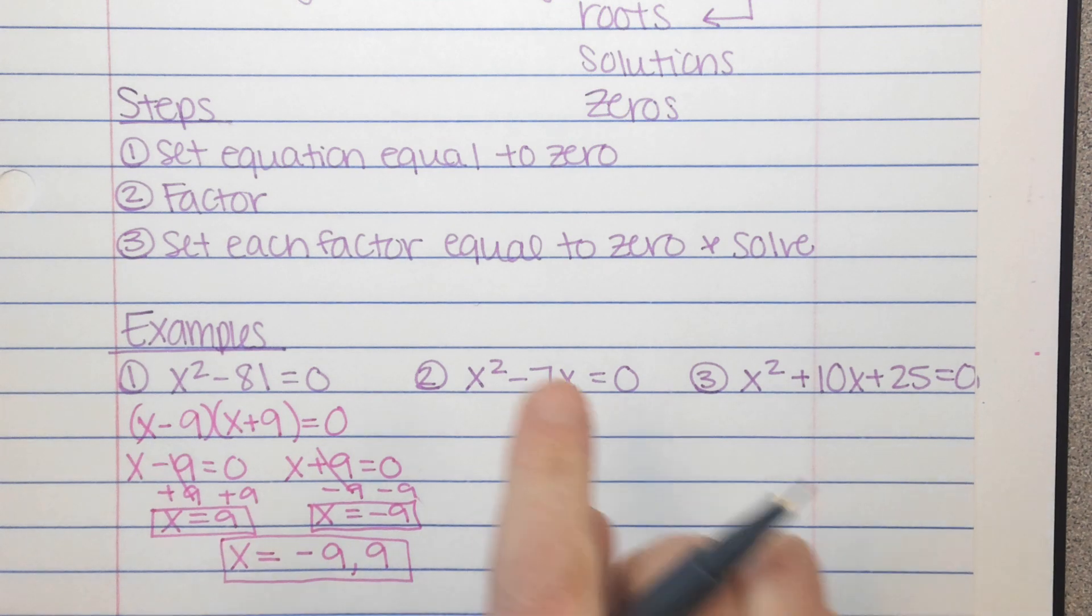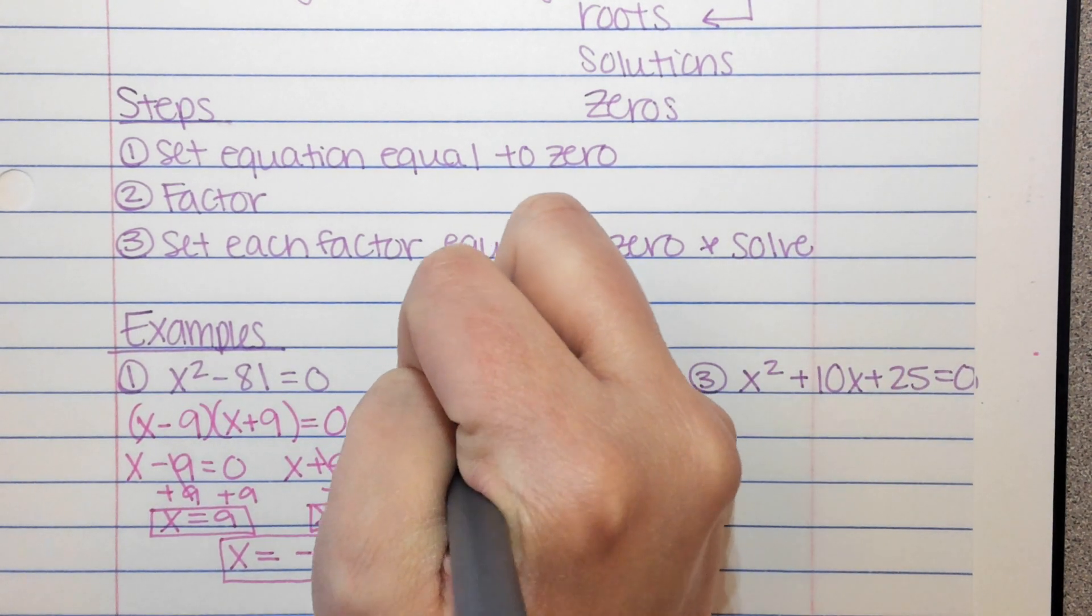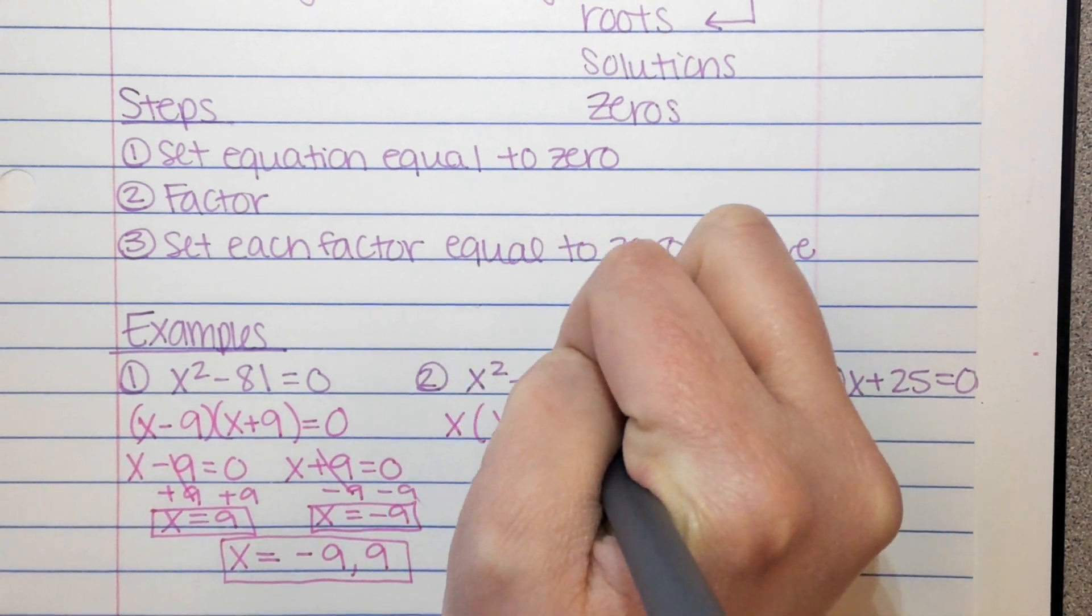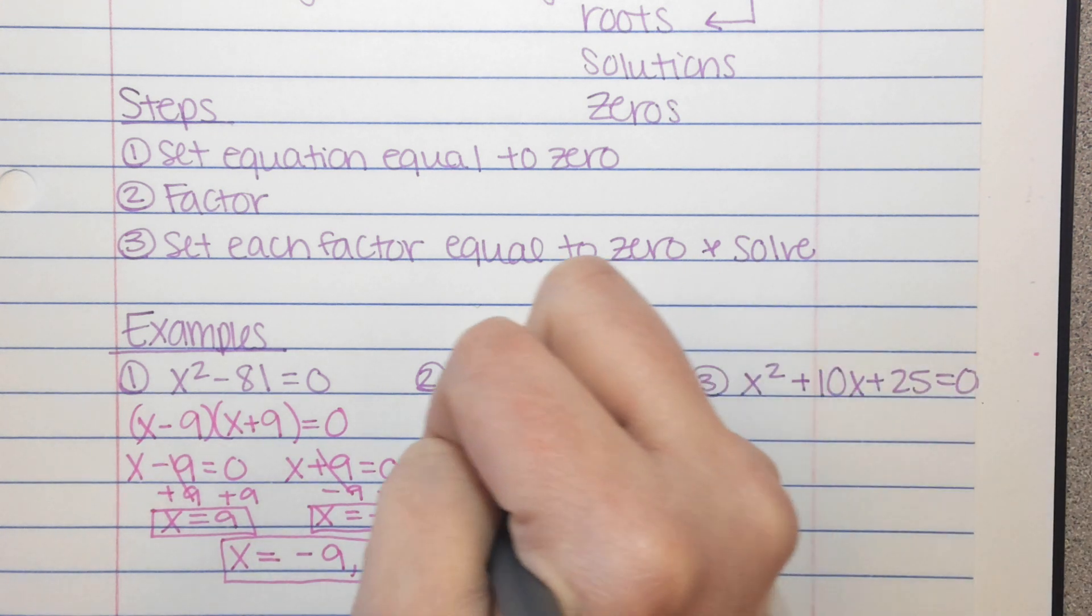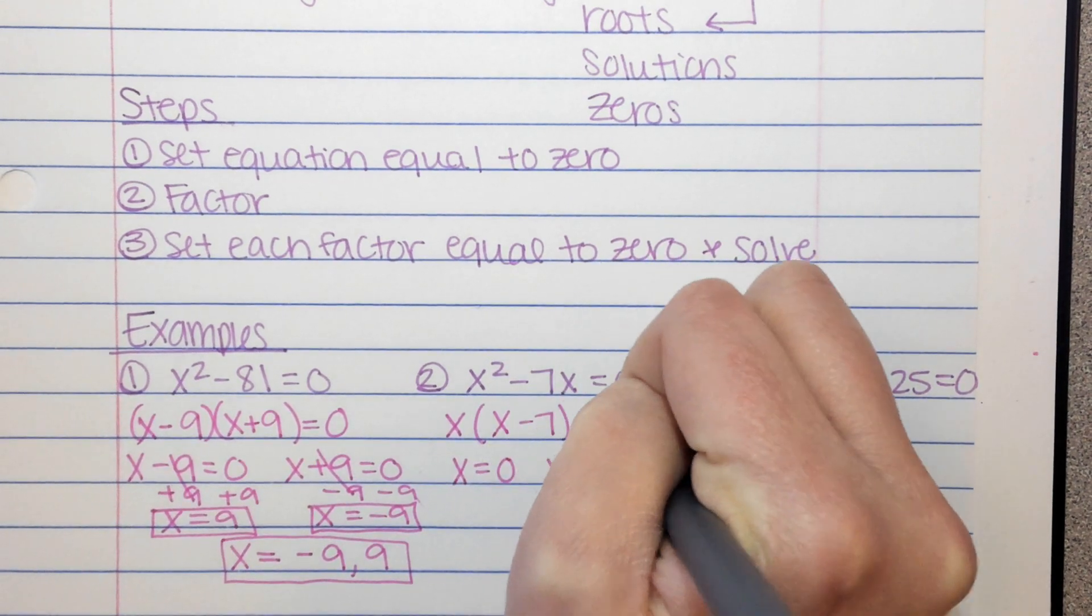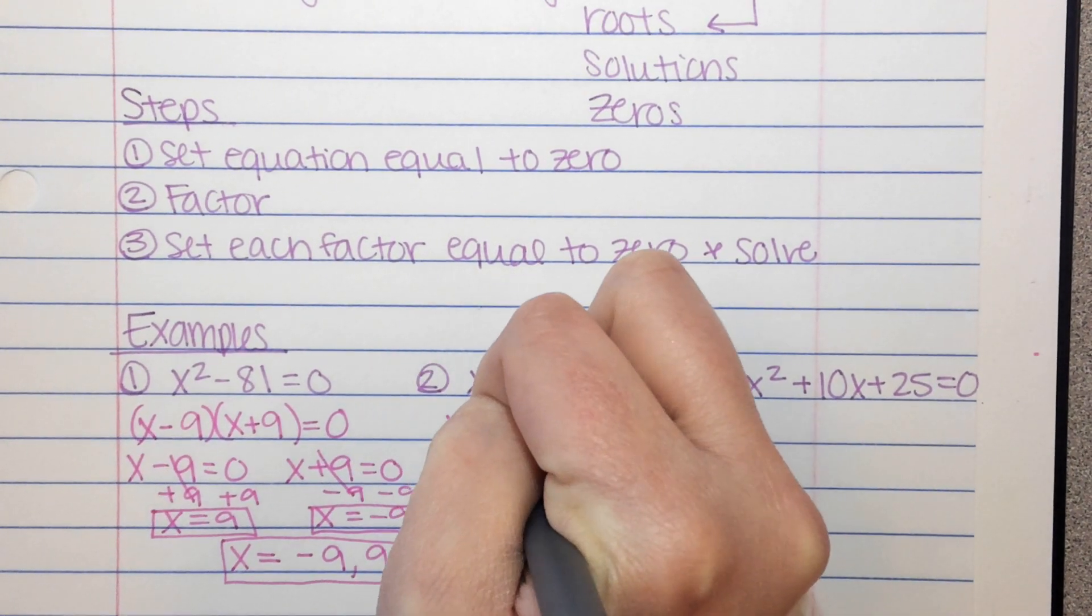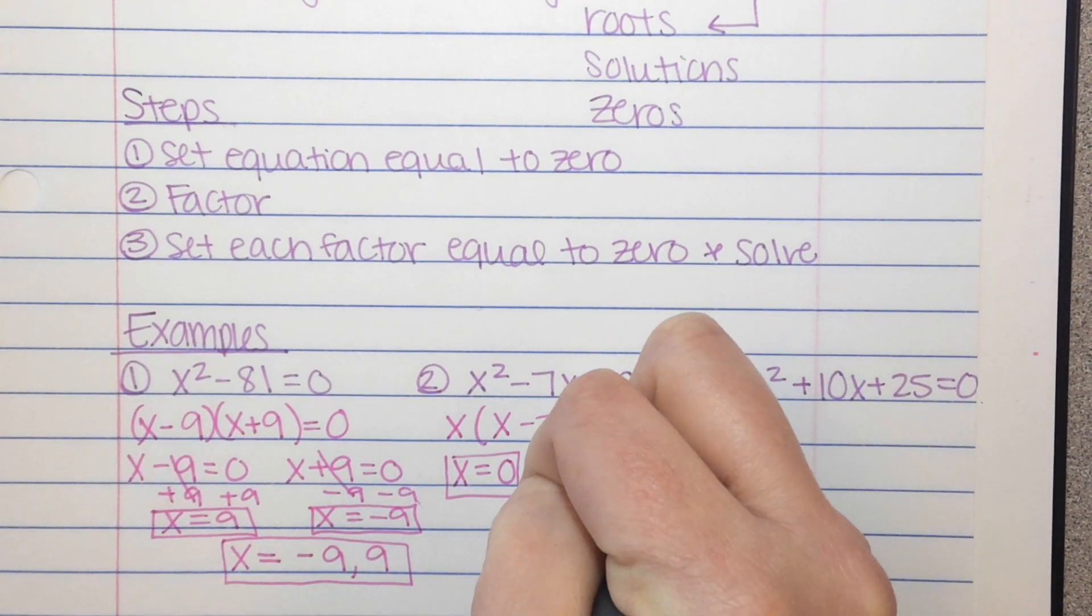So number two, we have x squared minus 7x. I see a GCF. So I pull out the x, and I'm left with x minus 7 equals 0. There's nothing else for me to do, so I'm going to set each of them equal to 0. So x equals 0, and x minus 7 equals 0. This one is good to go. This one I have to solve. So add 7, get x equals 7.